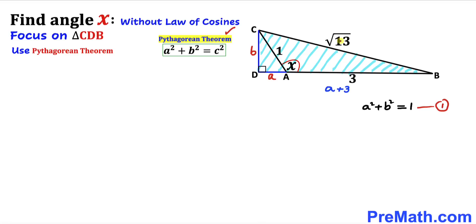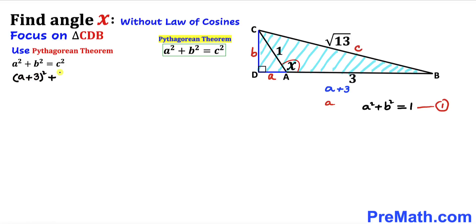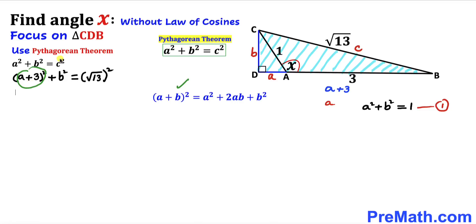Here's the Pythagorean theorem: a² + b² = c². Let me call this longest leg side C, this side A, and this side B. Filling in the blanks: (a + 3)² + b² = (√13)². Now applying the identity (a + b)² = a² + 2ab + b², the left-hand side becomes a² + 6a + 9 + b², and the square and square root cancel, so we get 13 on the right.